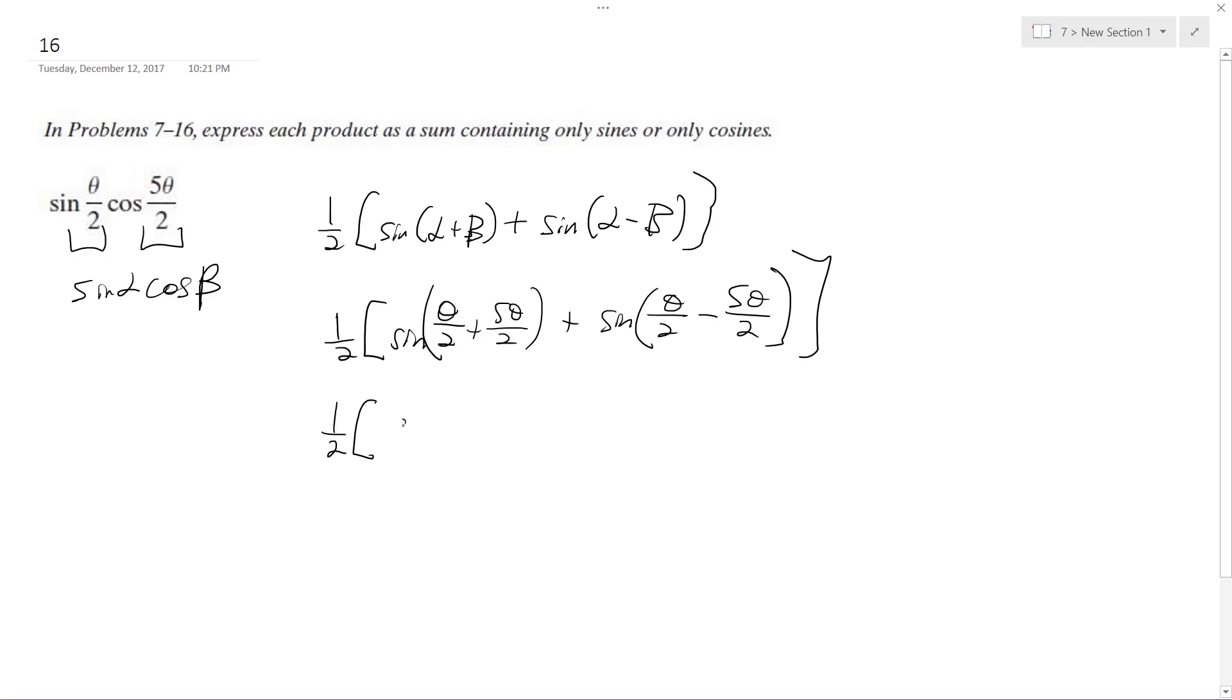So we get one half of sine, and this ends up being 6 theta over 2, which is just 3 theta, and then we have plus sine of, or sine of theta over 2 minus 5 theta over 2, which is negative 4 theta over 2, which becomes negative 2 theta.